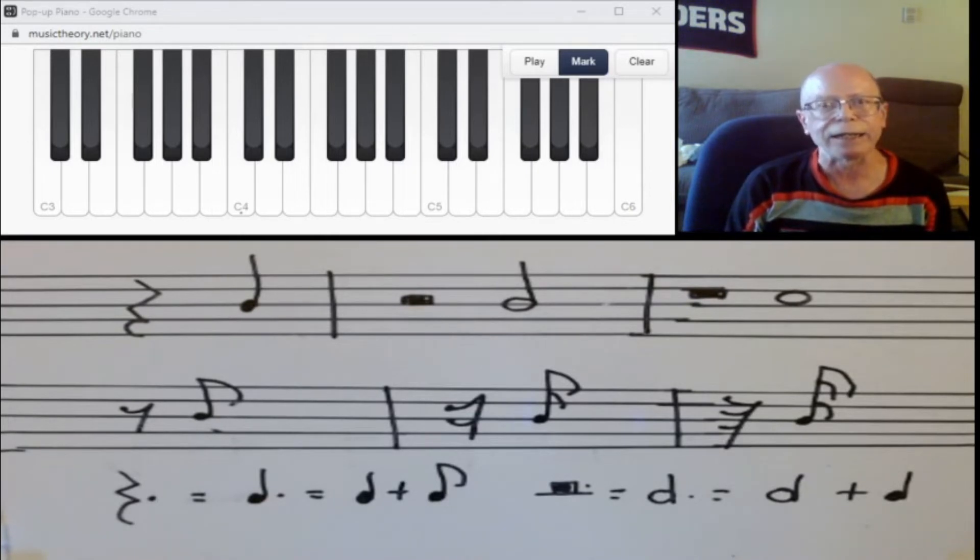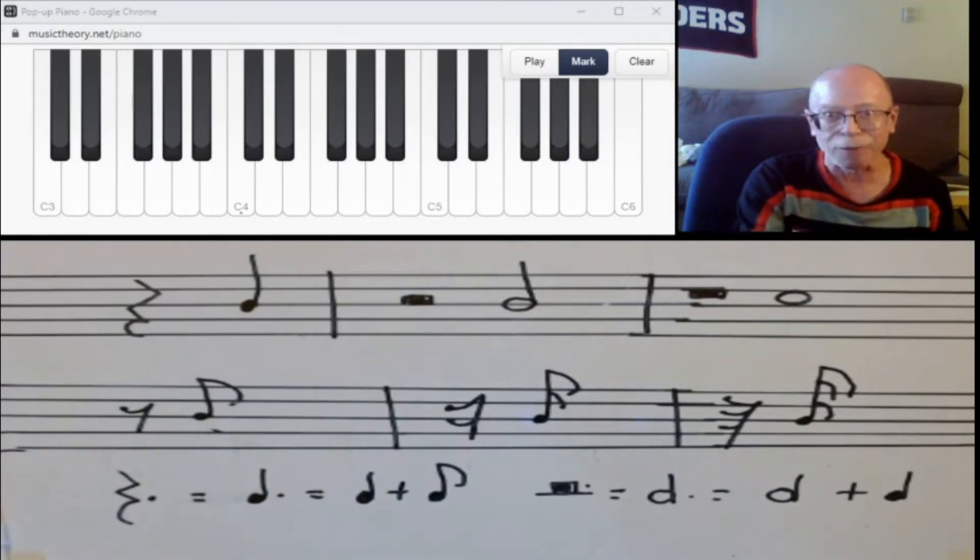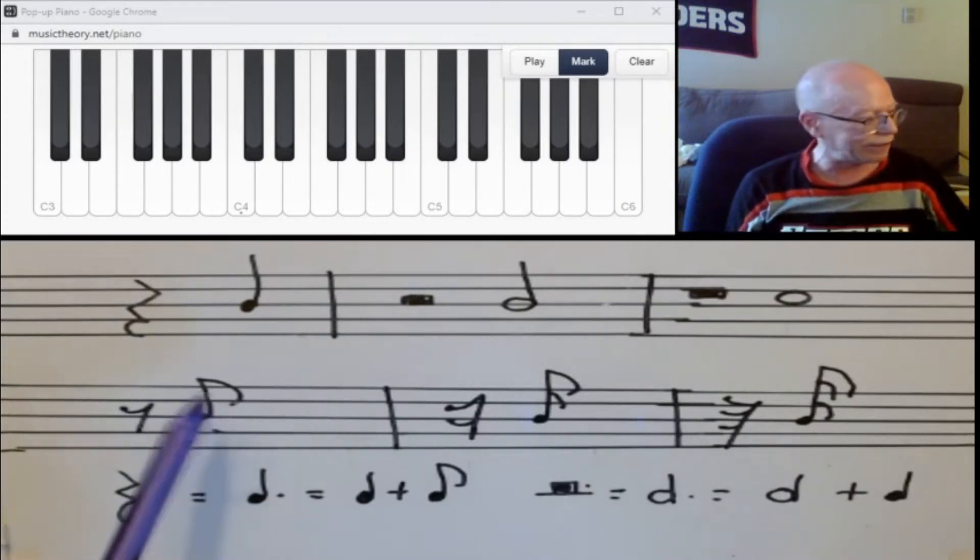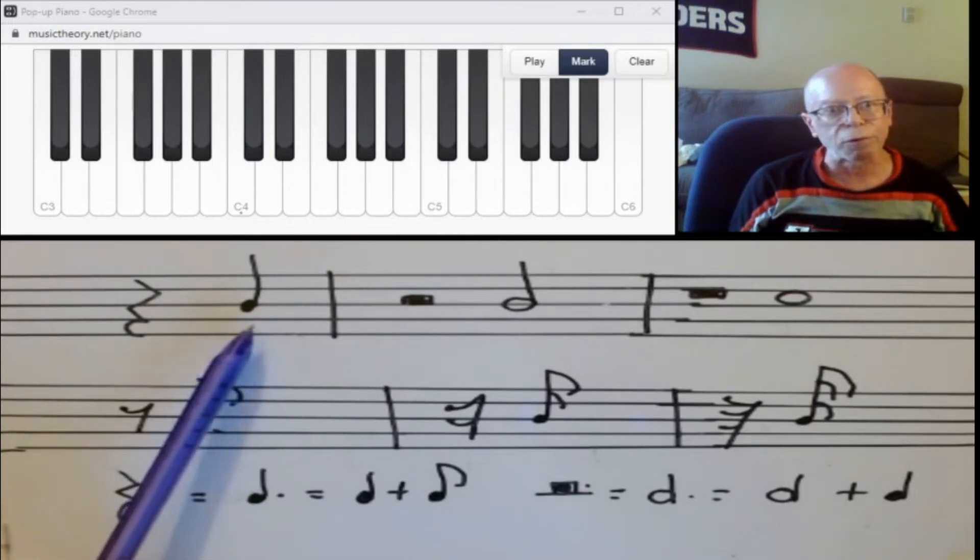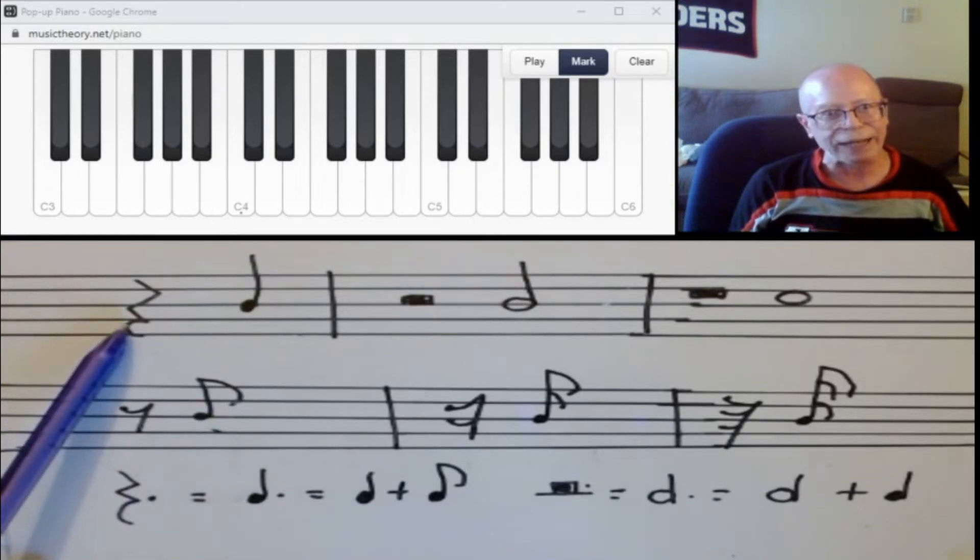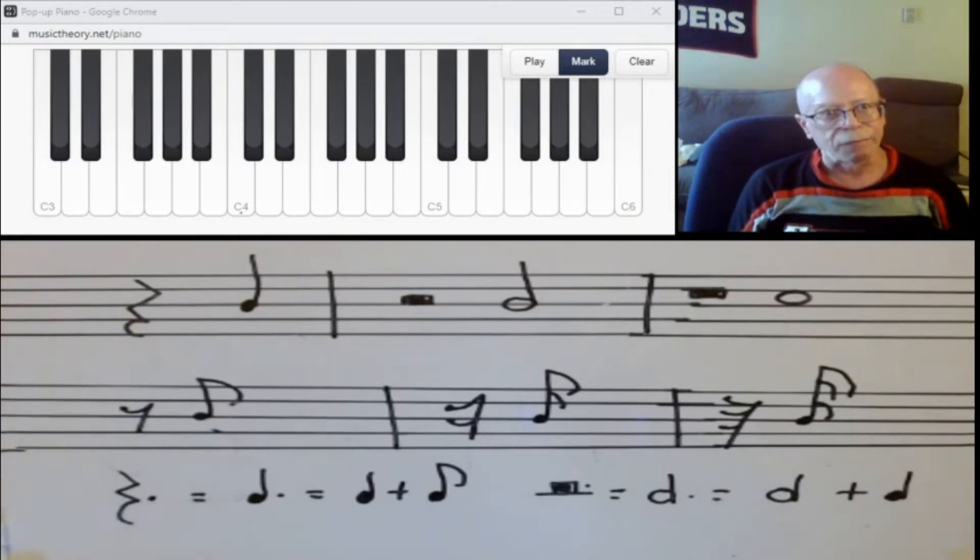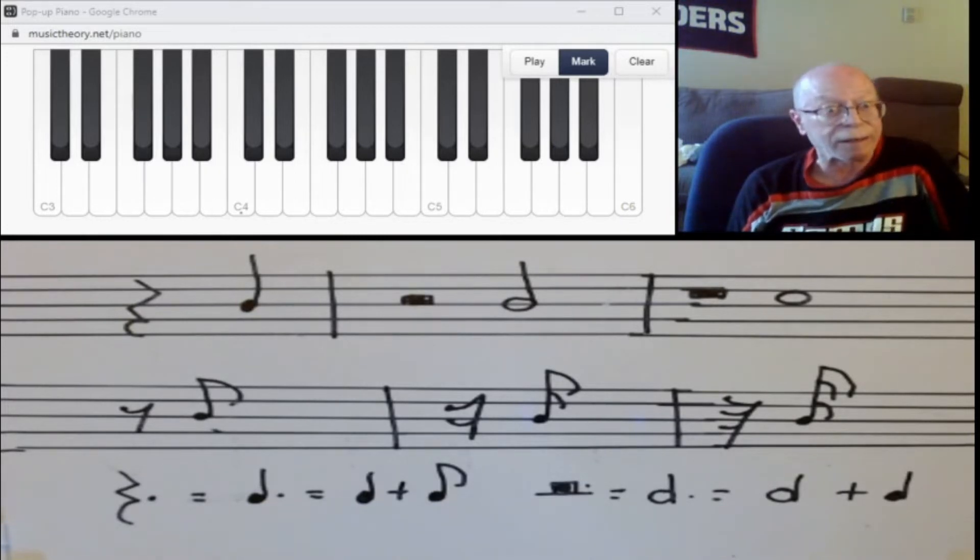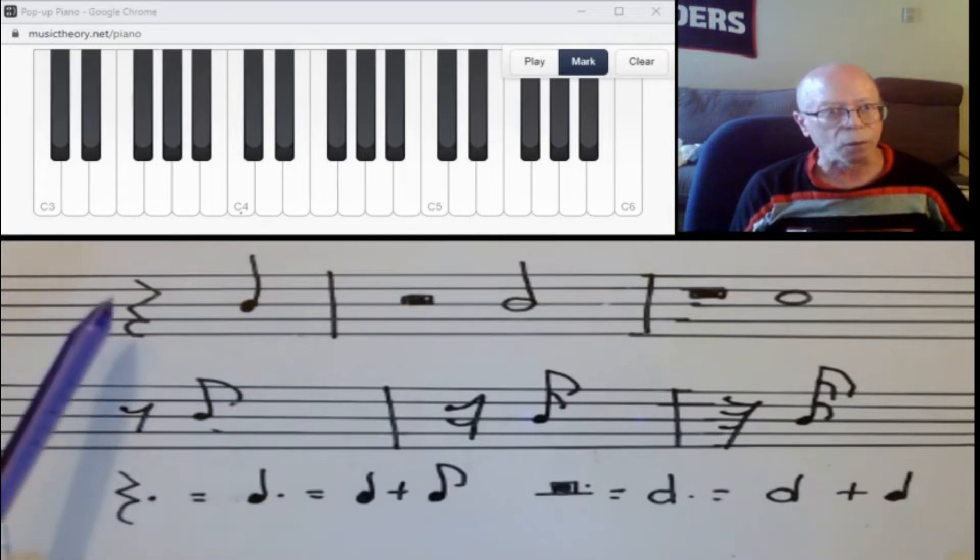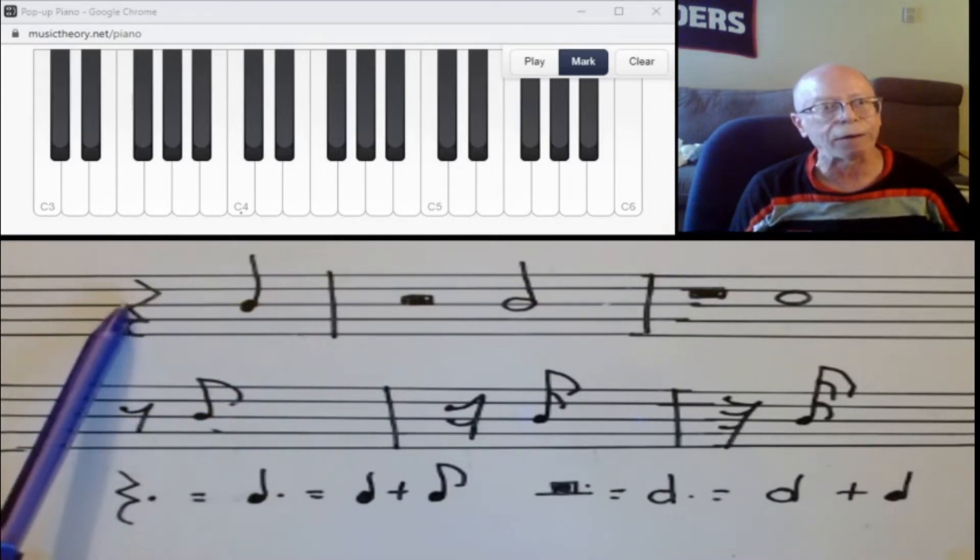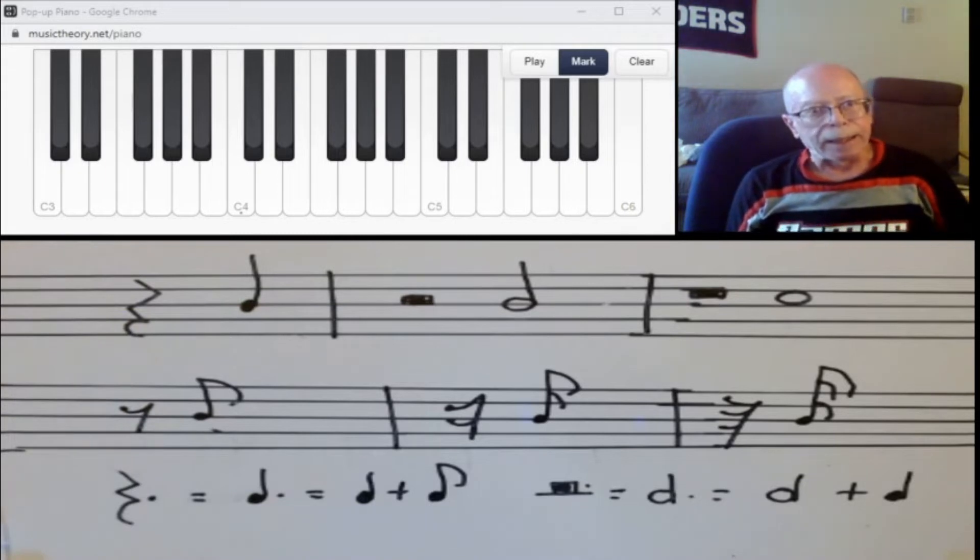Rests work exactly like notes, except it just means you don't play anything. For example, I have a quarter note. If you remember, that's worth one beat. Well, this funny looking thing is called a quarter rest. It is also worth one beat. We don't know why it looks so funny. Some notation was just developed way back. But instead of counting for one beat on a quarter note, the rest would tell you don't make any sound for one beat.